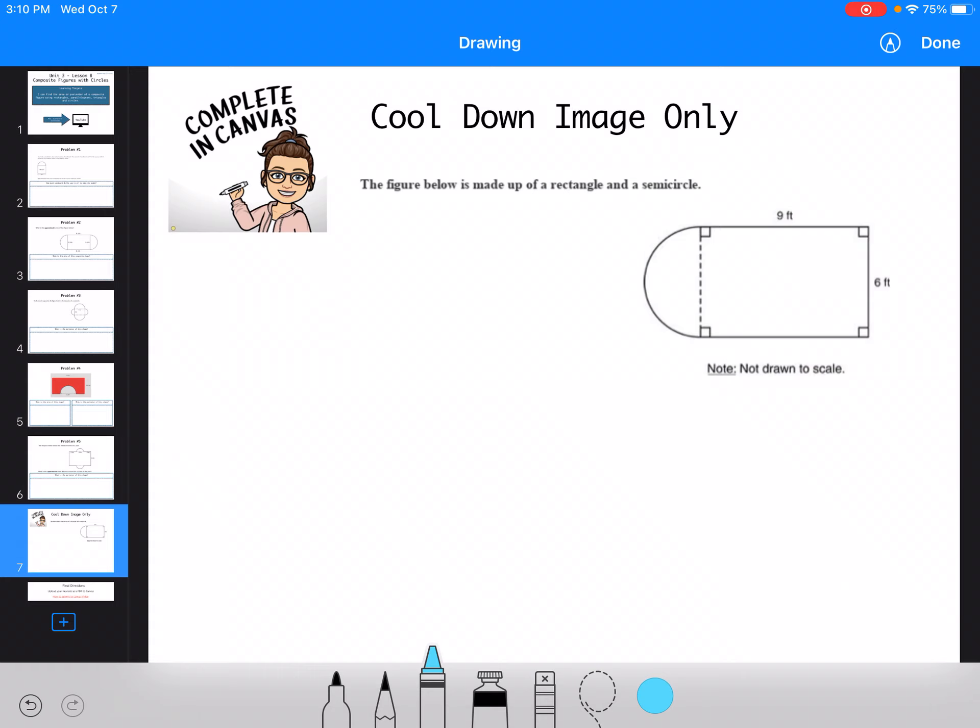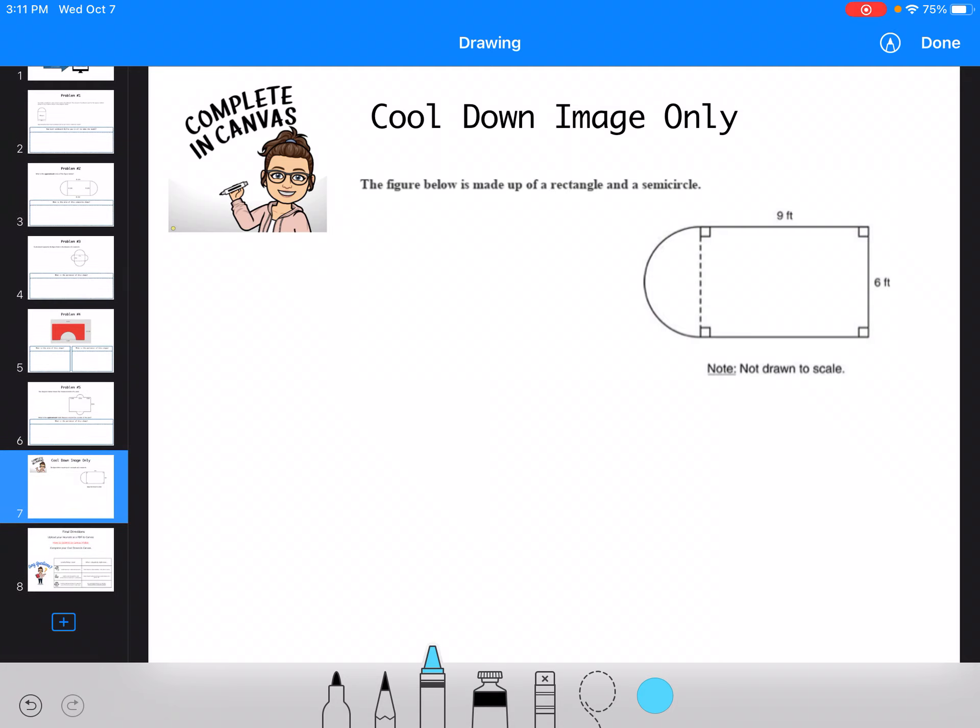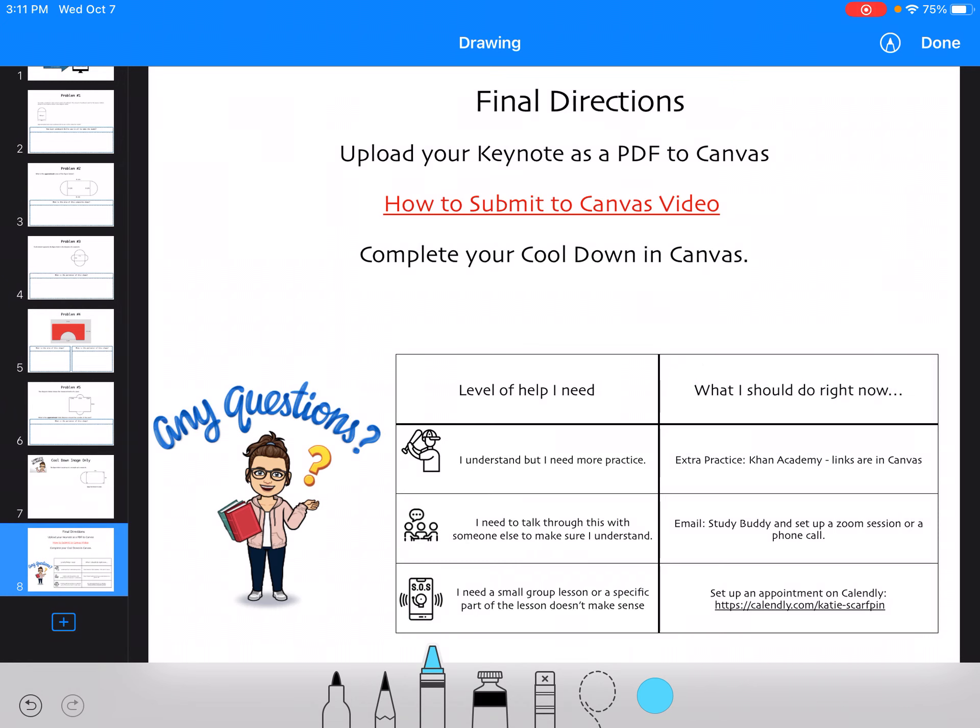The last one, the figure below is made up of a rectangle and a semicircle, and they're going to ask you to find either the area or the circumference. Make sure you read carefully in the question. If you need help, you're going to go on Khan Academy. There's some extra practice there. There's a study buddy, and you can always set up an appointment with me on Calendly. I would love to work with you. Have a great rest of your day.